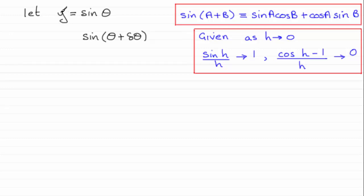And what's going to happen is that y is going to increase by a small amount, let's say by delta y. So we've therefore got y plus delta y equals the sine of all of theta plus delta theta.